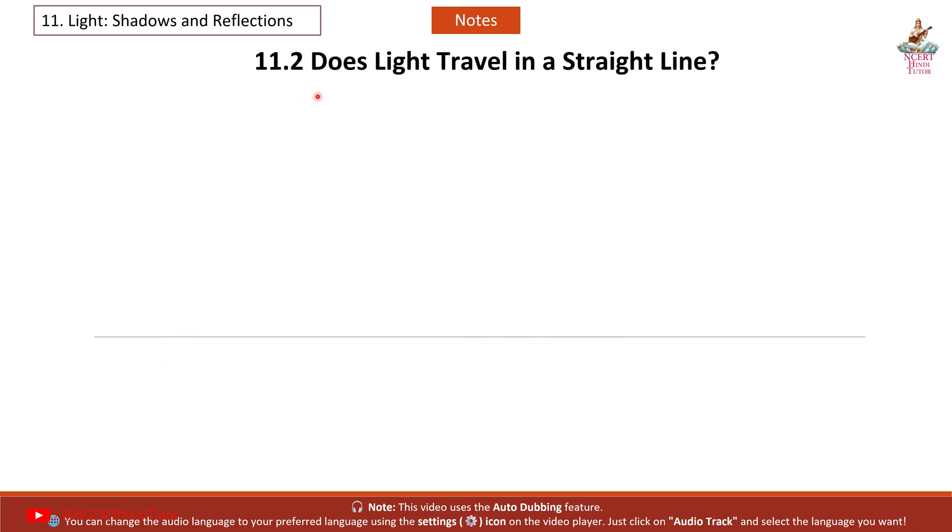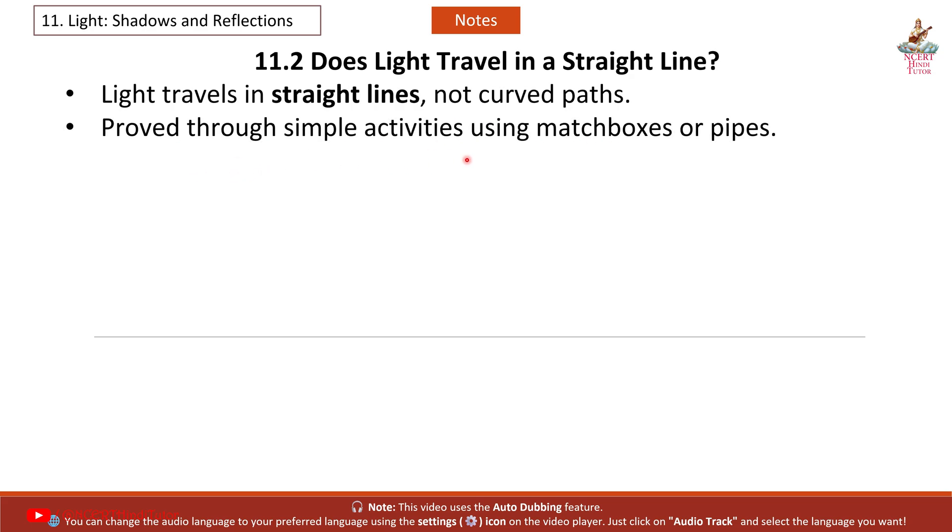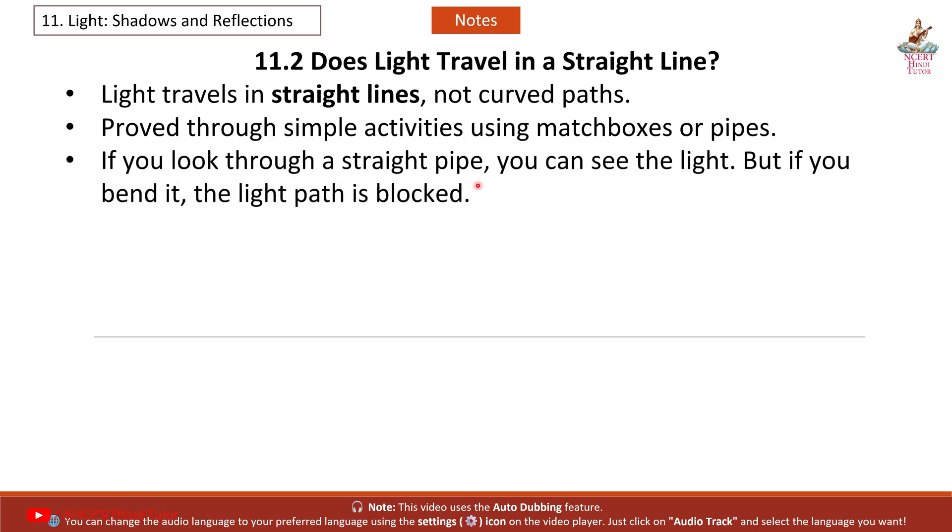11.2 Does light travel in a straight line? Light travels in straight lines, not curved paths, proved through simple activities using matchboxes or pipes. If you look through a straight pipe, you can see the light, but if you bend it, the light path is blocked.